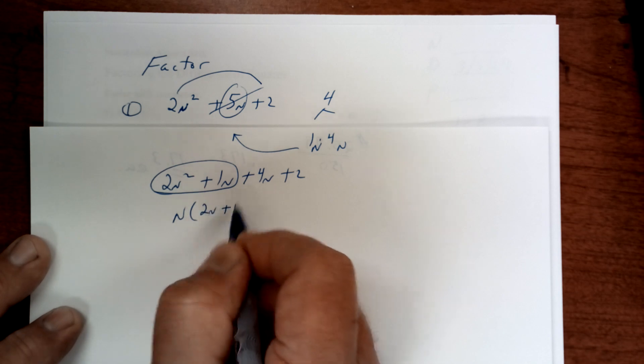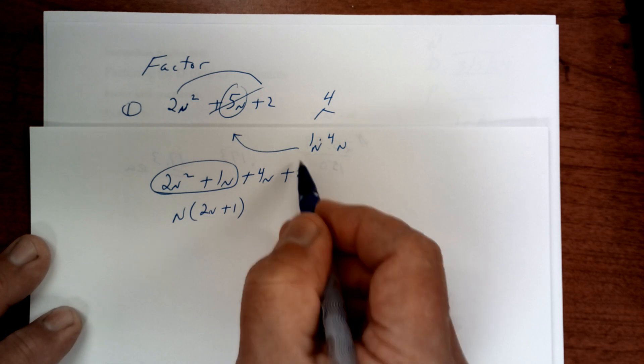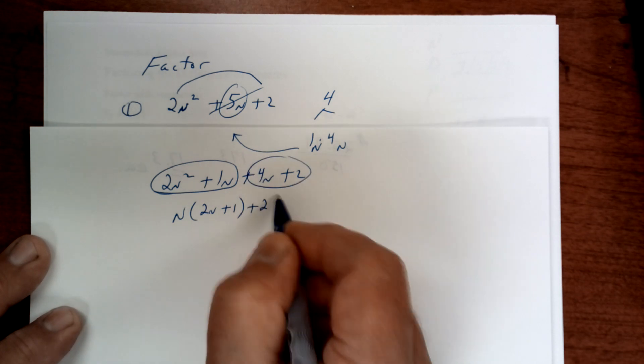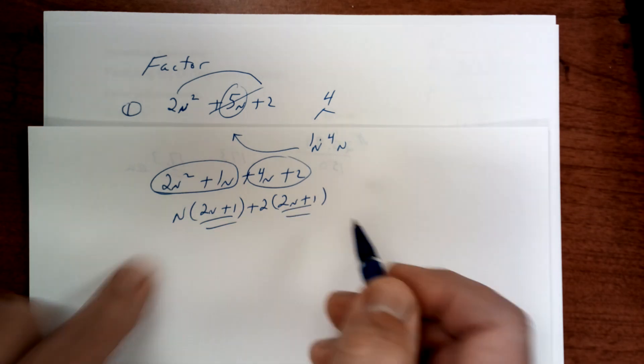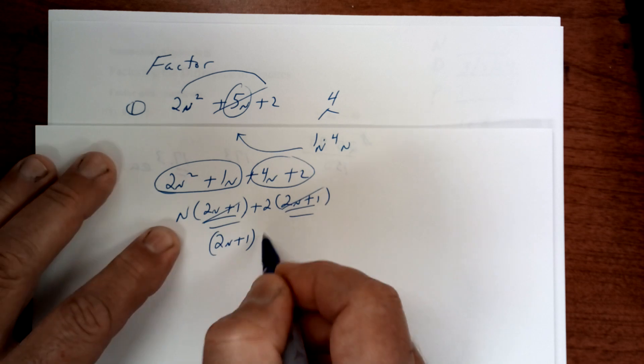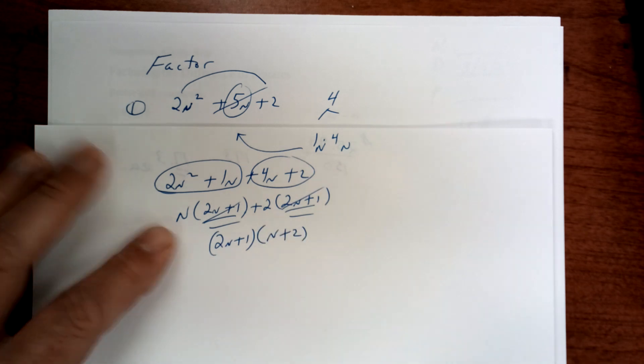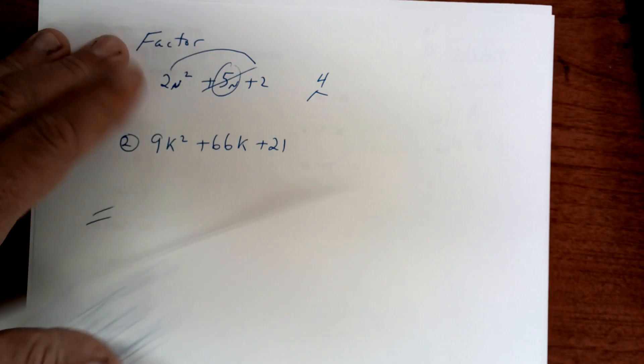Here you're going to take a 2 out and you're going to be left with the same thing. Once you get the same thing, you take one of those out and you're left with n + 2. That's how you factor that. Let's finish it up. Copy this one down.